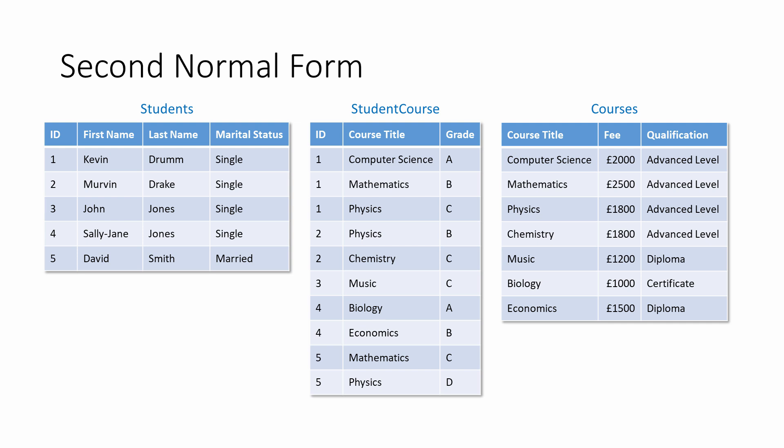All of these tables are now in second normal form. The Student-Course table is sometimes called a bridging table, or a link entity, because it serves to join the three tables together. Overall, there are fewer individual data items being stored than when there was a single table in first normal form. The database is now more space efficient, and this efficiency will become even more significant as the number of students and courses grows.